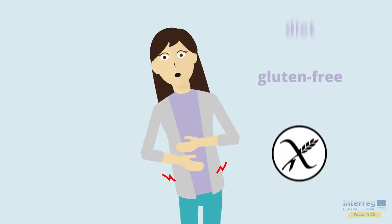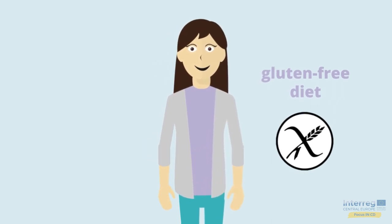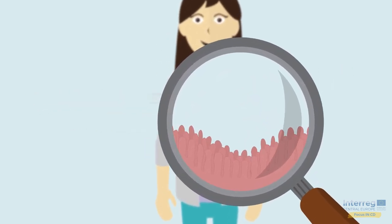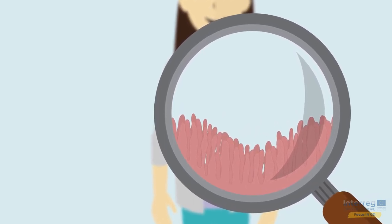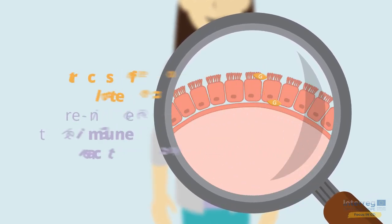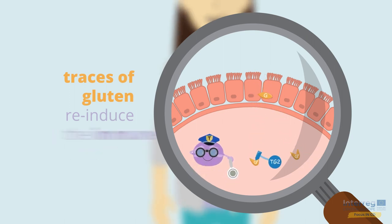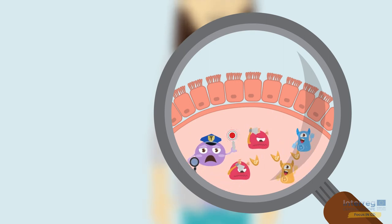With a gluten-free diet, the immune reaction stops, the small intestine will heal and the villi will recover. However, because the immune system is extremely watchful, even traces of gluten re-induce the immune reaction. The immune cells remember gluten as a former foe and will re-initiate an immune response right away.